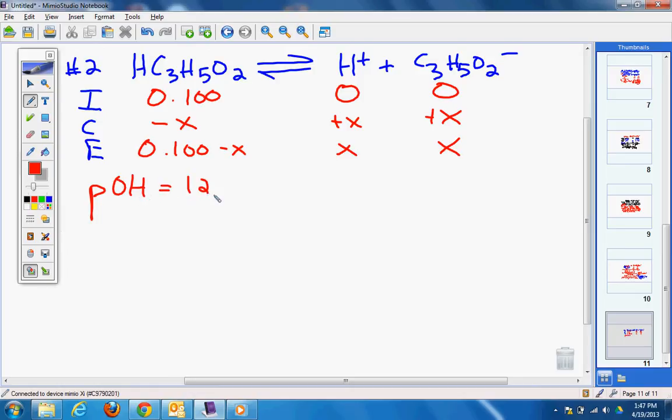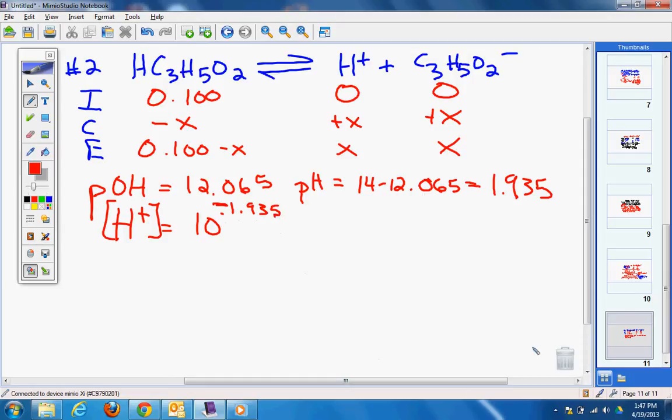So we have POH 12.065, which means my pH is going to be 14 minus 12.065, which equals 1.935. And then we do [H⁺] is going to be the concentration of H⁺, 10 raised to the negative 1.935. And you get 0.0116.